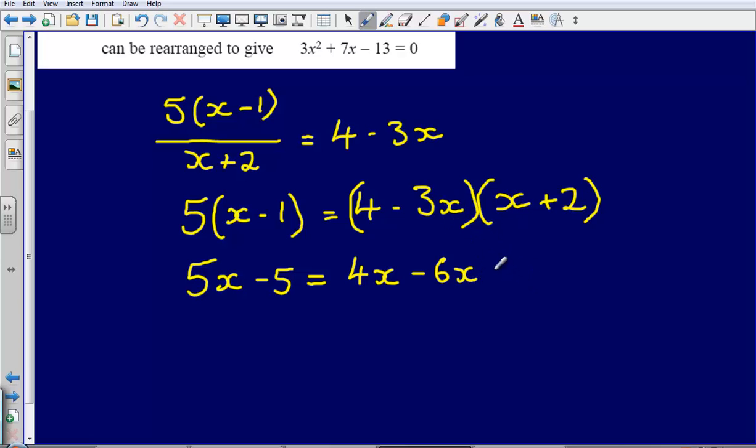Then negative 3x multiplied by x is going to give me minus 3x squared. And then 4 multiplied by 2, that's going to give me 8.